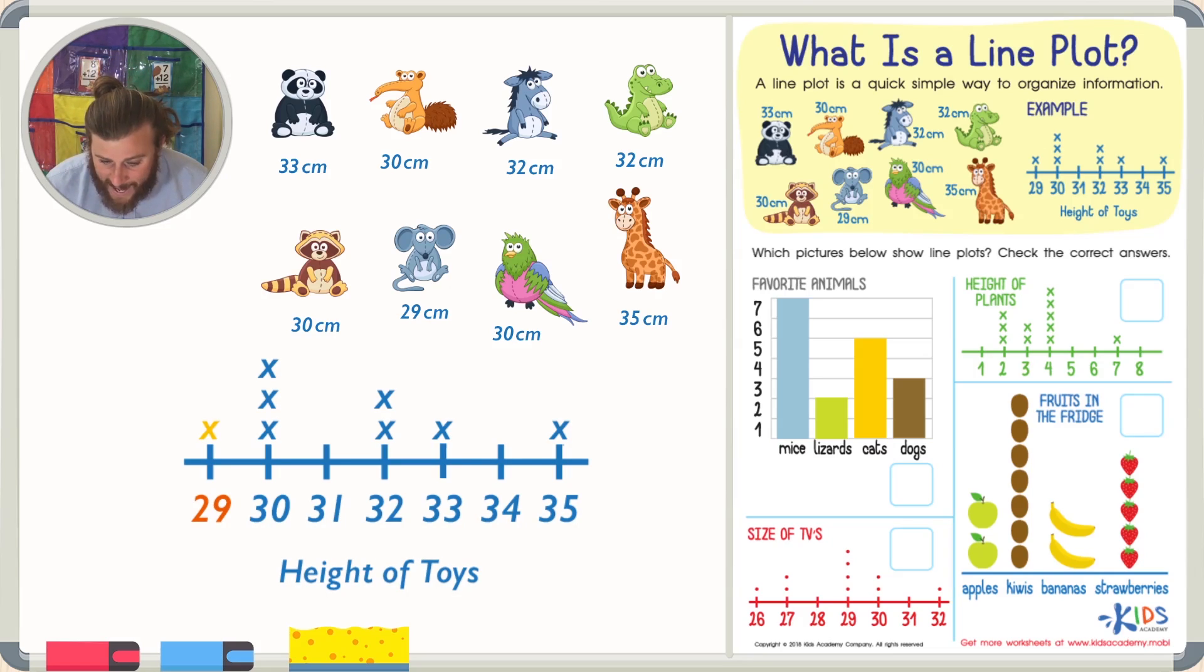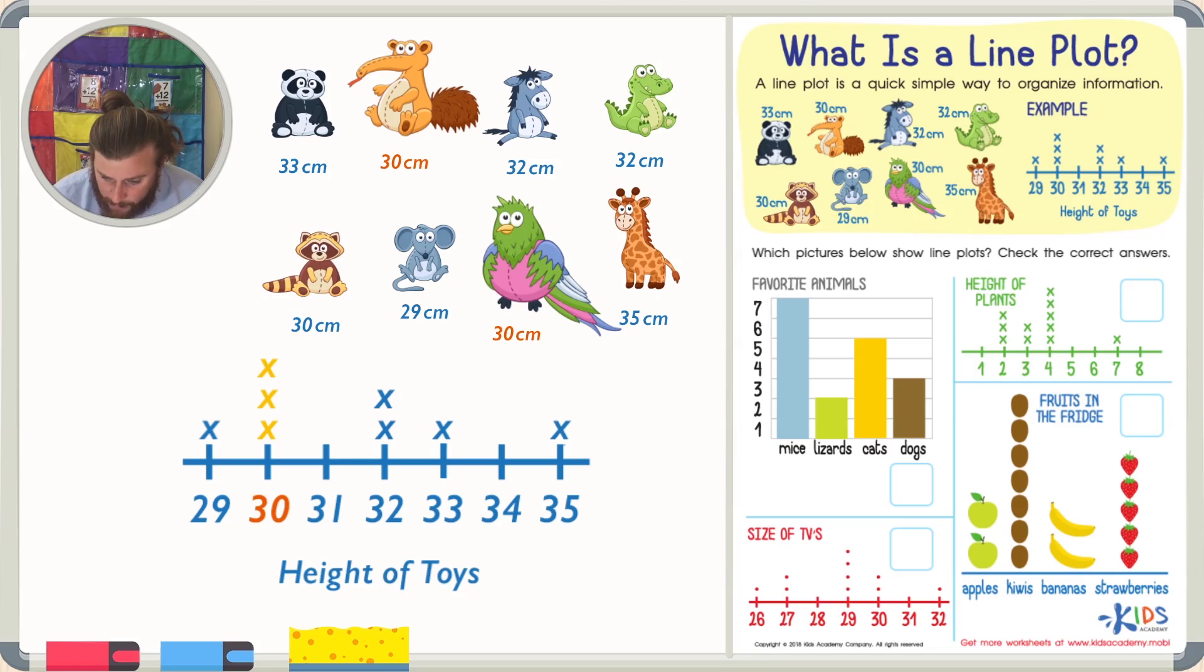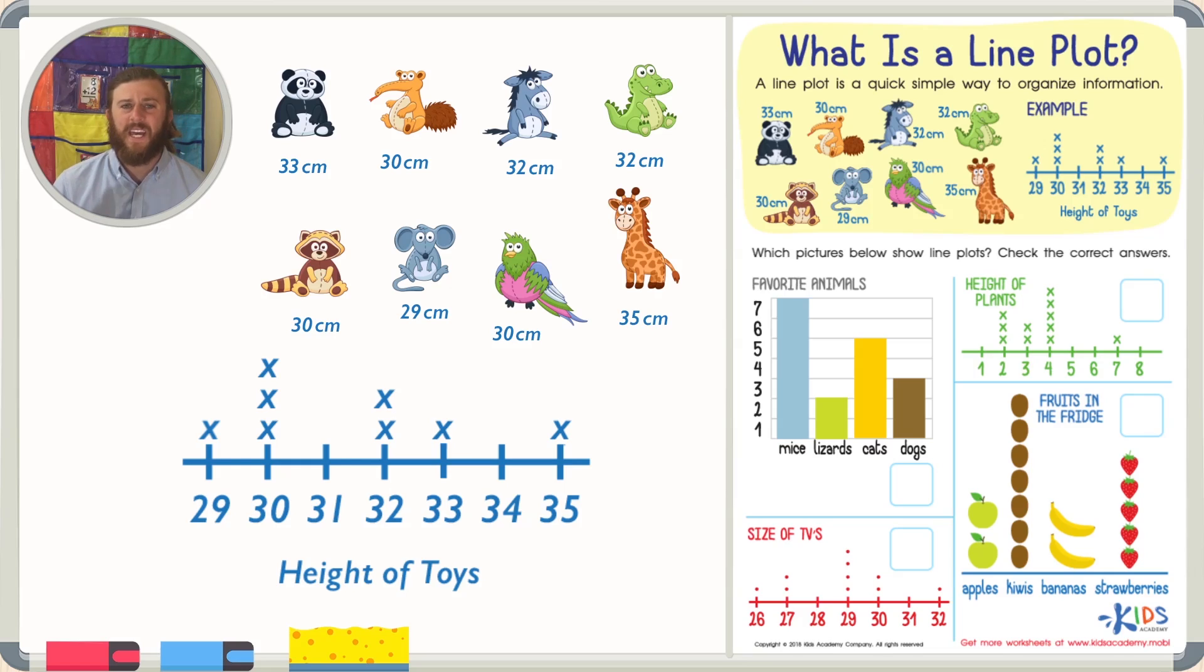So I know that by looking at this line plot, there is one animal that's 29 centimeters tall and that is true because if you look at the animals, you can see that the mouse is 29 centimeters tall. If you look at the line plot, you'll also see that there are three animals that are 30 centimeters tall.